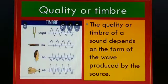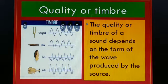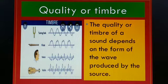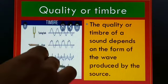The next characteristic is quality or timbre. Quality or timbre is the characteristic of sound that distinguishes between sounds produced by different sources having the same pitch and loudness. That means, when we are playing different musical instruments, we can identify the sound of each instrument.